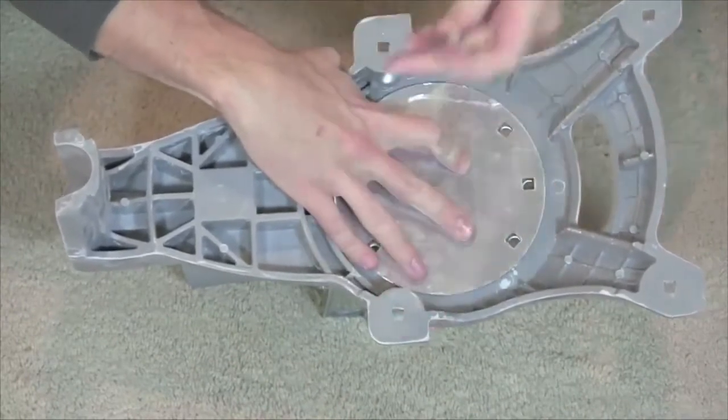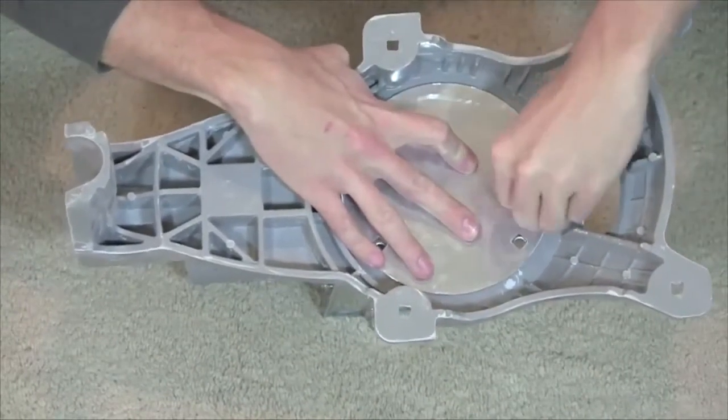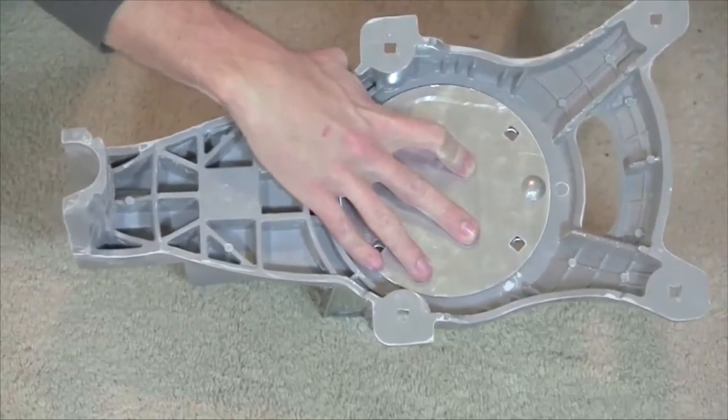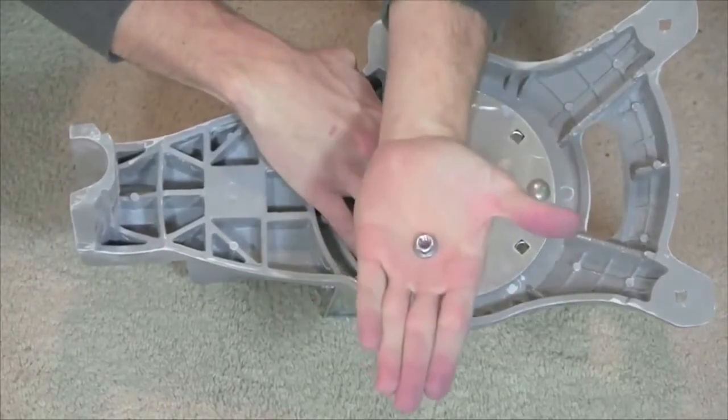Once aligned, insert a half inch bolt all the way through the tilt plate and Azel assembly. Secure it with a half inch nut on the other side.